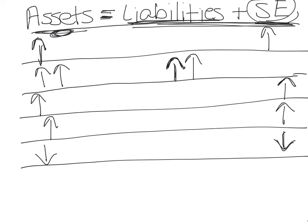Sometimes everything happens on the left-hand side of the accounting equation — two assets are affected. For example, if a customer pays on their account, they owe us, say, a thousand dollars from services provided earlier. Our cash goes up — that's one asset increasing — and accounts receivable goes down by a thousand dollars — that's another asset decreasing. So you mark asset increase and asset decrease, and the two cancel each other out.